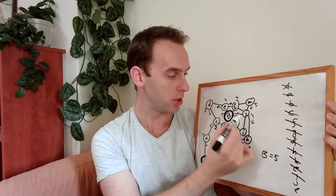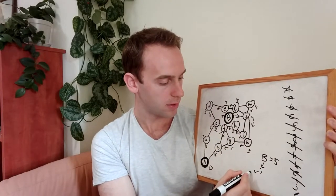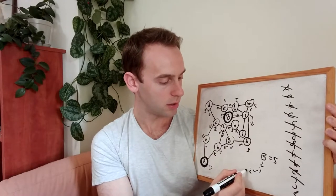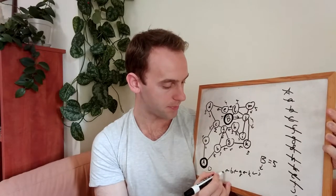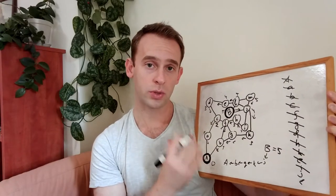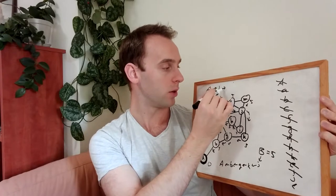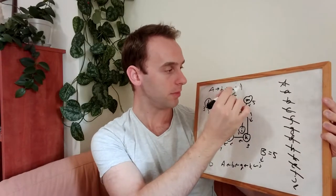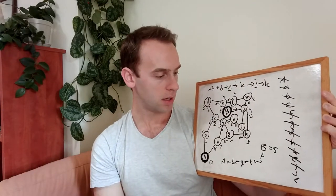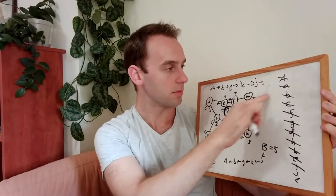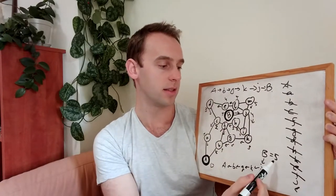B is pointing at J. J is pointing at K. K is pointing at G. G is pointing at B. And B is pointing at A. So all we need to do now is reverse this path. And we have the path of A going to small B, going to small G, going to K, J, and B. This is the path. This is the shortest path. And its length is five.